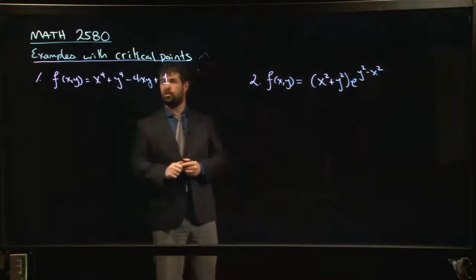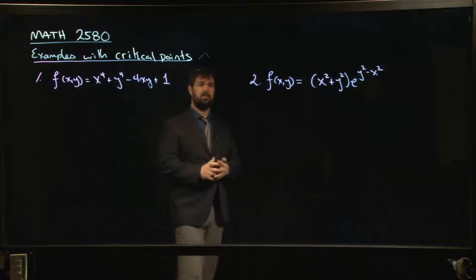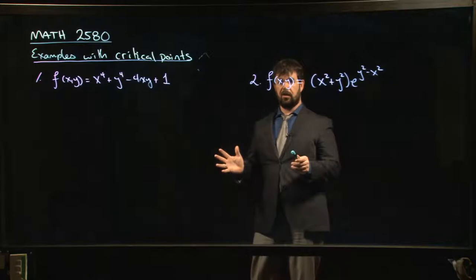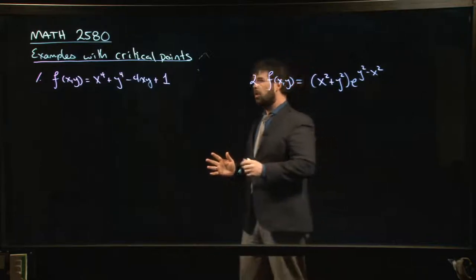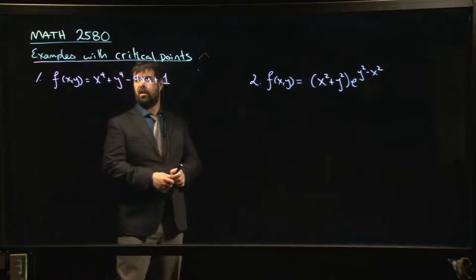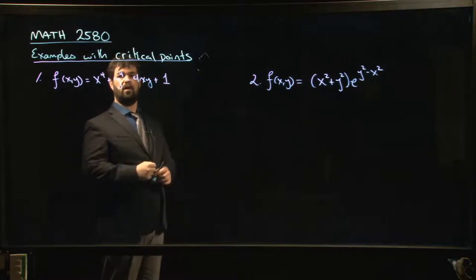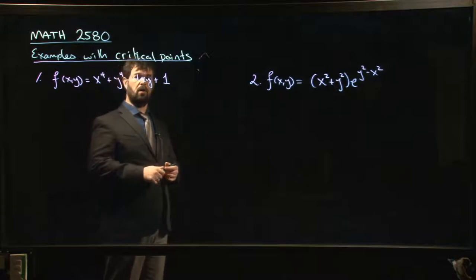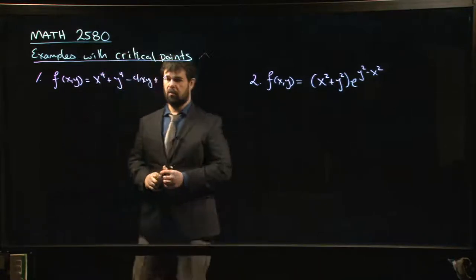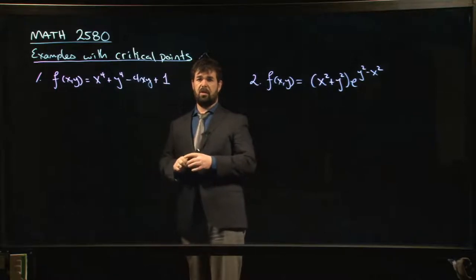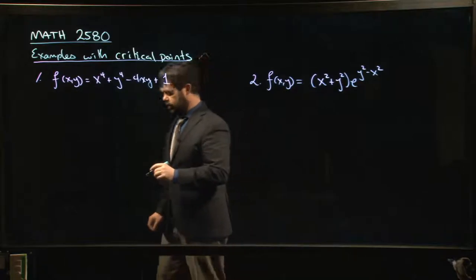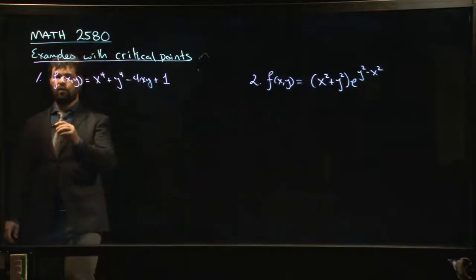Alright, so we're going to continue our discussion of critical points for functions of two variables with a couple of examples where we find and classify the critical points. So we'll start with this example here. Here's our function of two variables - we've got a degree four polynomial function with x to the fourth, y to the fourth, and we've also got this product term with x times y, which is probably going to complicate our algebra a little bit.